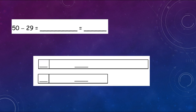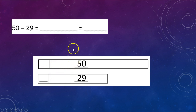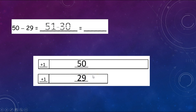Let's do this one. Let's put the 50 here and the 29 here. We need to change this one to the closest 10, which is 30. How many more do we need to add? One. Remember, we have to add it to both numbers. So let's add one to the 50 and one to the 29. Now 50 plus one is 51, and 29 plus one is 30. So our new number sentence is 51 minus 30. Go ahead and solve that. Did you come up with 21? Good job.